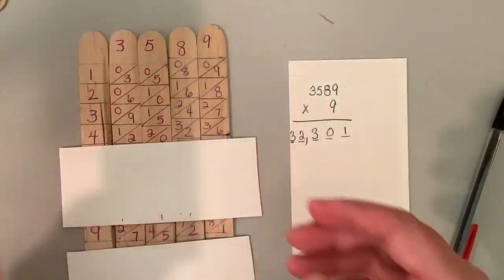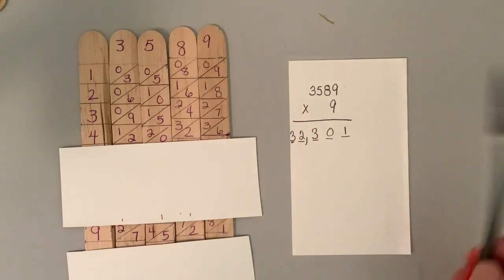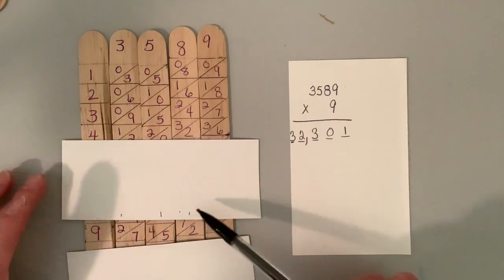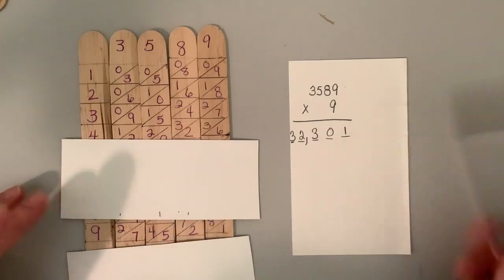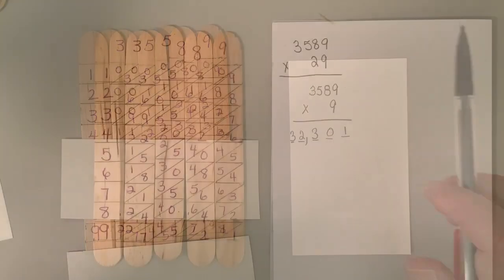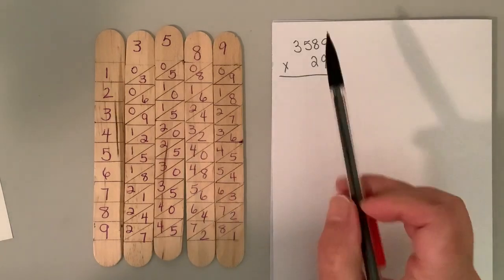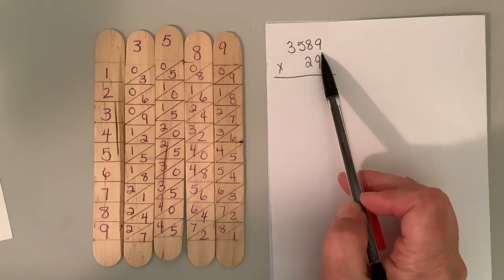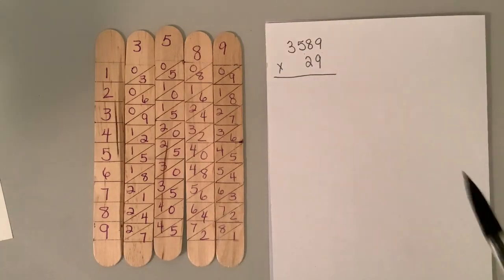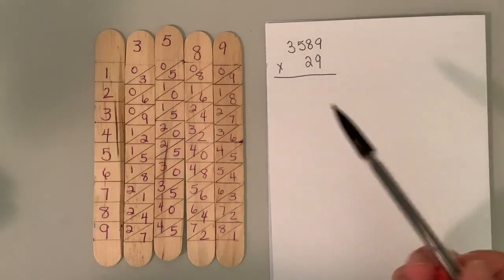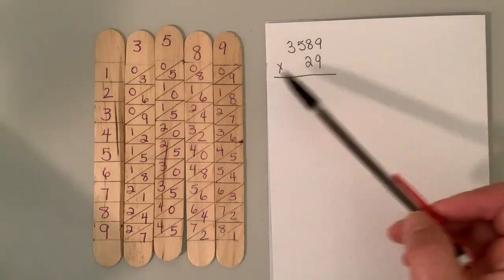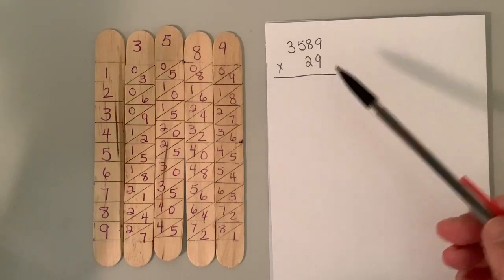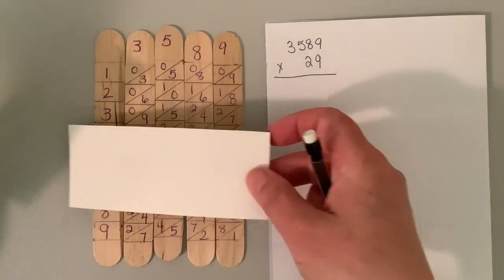Usually though, especially with the kids, they get good enough that they're not writing these carries down. They're just doing that in their head. Let's use the same number 3589, but this time let's multiply it by 29. So we're going to break it up into two parts. And this is how Napier did it. We're going to multiply by 20 and we're going to multiply by nine. So we just multiplied by nine, but let's do it again.